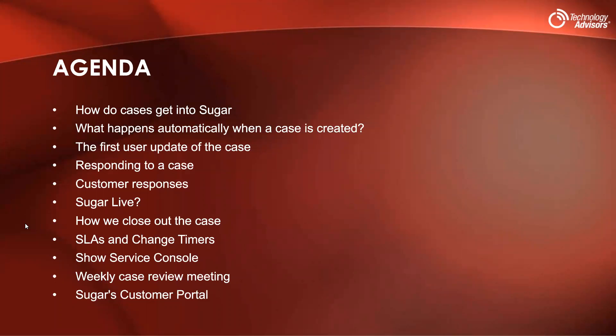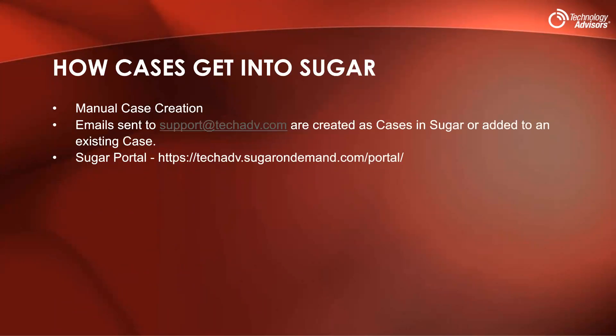So, how do we get cases into Sugar? We as users can do manual case creation. We also have the ability for anyone who sends an email to support@techadv.com — those cases are created in Sugar. If there's a case tag in the subject line, those emails are added to an existing case. Then we have the Sugar portal with the URL you can see there, and we'll show that in just a minute.